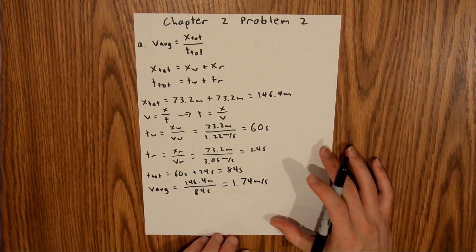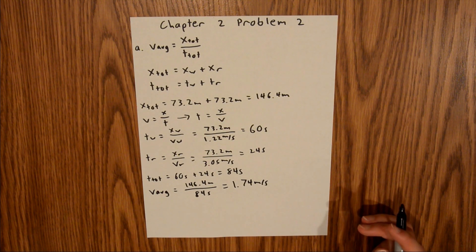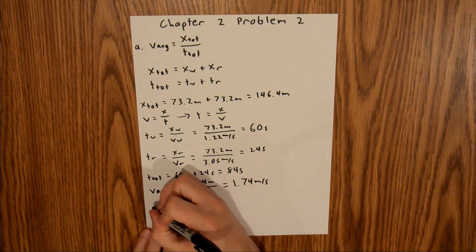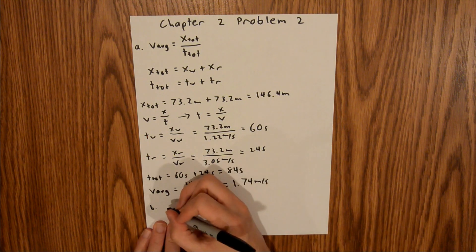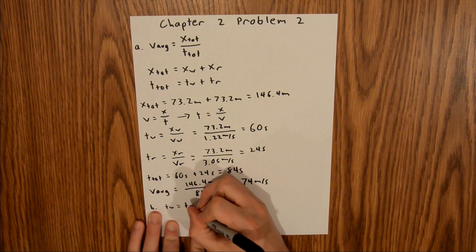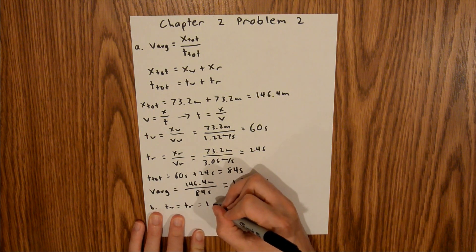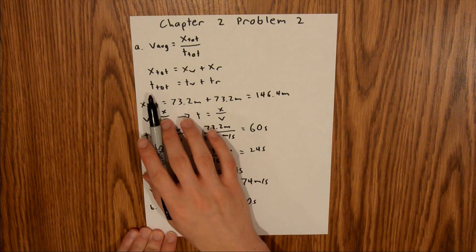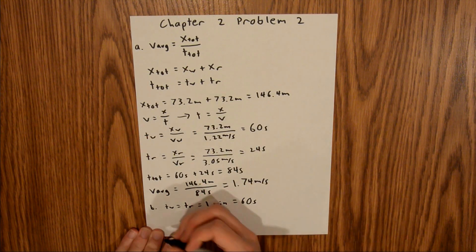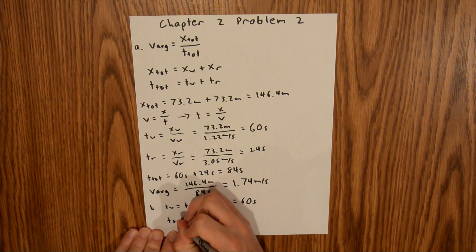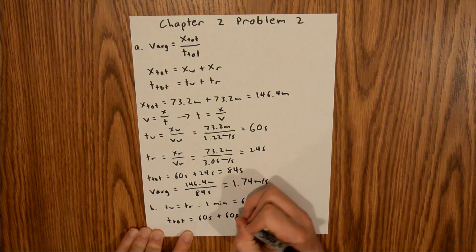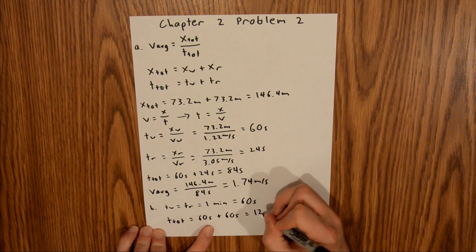That's it for Part A. Now for Part B, we're going to be doing similar calculations, except that we are given times and velocities and not displacements. For Part B, we are told that the time walked is equal to the time ran, which is equal to 1 minute, which is equal to 60 seconds. So then we can directly calculate T-total. T-total is equal to 60 seconds plus 60 seconds, and that is equal to 120 seconds.